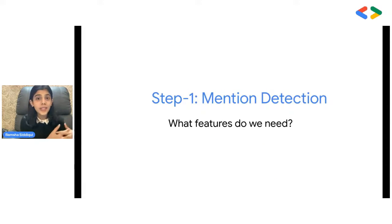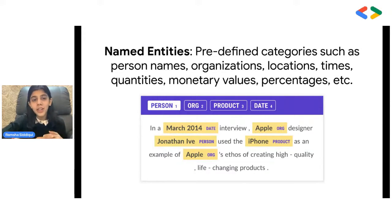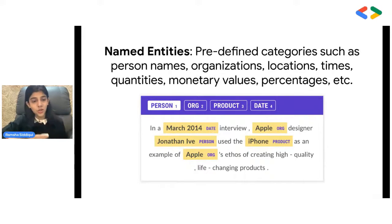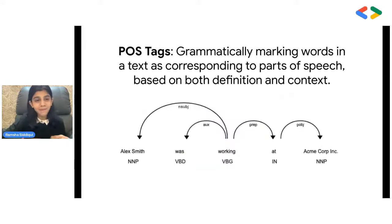Now let's look at how to successfully execute mention detection and what features we need. The first set of features are named entities — predefined categories such as names of people, organizations, companies, geographical locations, dates, times, quantities, money, etc. These can be extracted using rules, heuristics like regular expressions, pick lists, or machine learning models specifically written for named entity recognition.